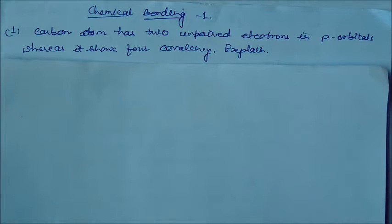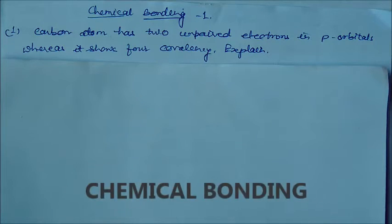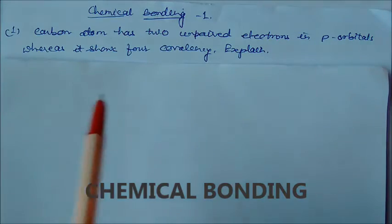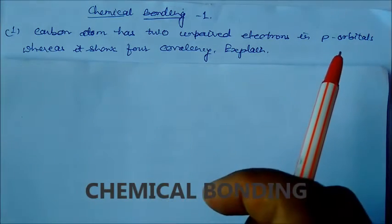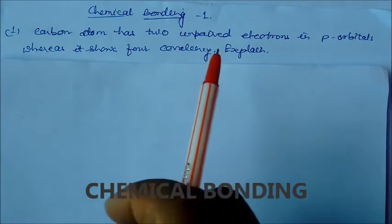In this session we will discuss some reasoning-based questions of this chapter, chemical bonding. This is the first part of the topic. Each question is a challenging reasoning question, so go through it. It will be useful for your examination purposes as well as competition examinations - both your board level examination and entrance. Let us see one by one. Carbon atom has two unpaired electrons in p-orbitals whereas it shows four covalences. Explain.